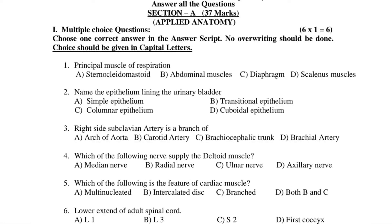Fourth question: Which of the following nerves supply the deltoid muscle? A. Median nerve. B. Radial nerve. C. Ulnar nerve. D. Axillary nerve.